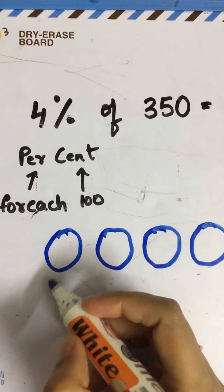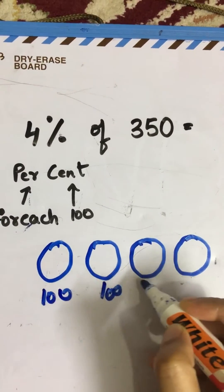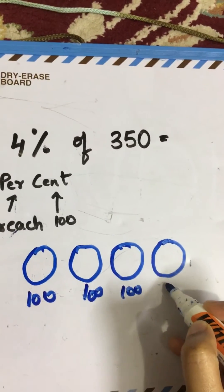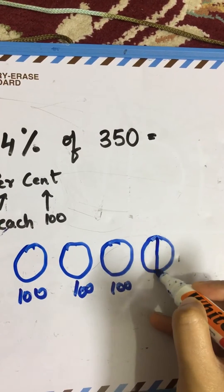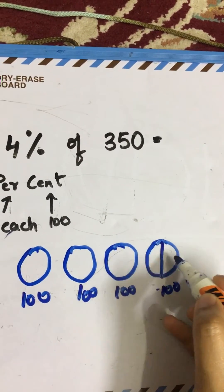This is 100, this is 100, this is 100, and here this is 100. But we will divide it into two because we don't want 100, we just want 50.